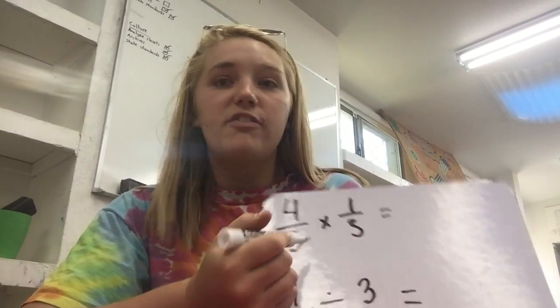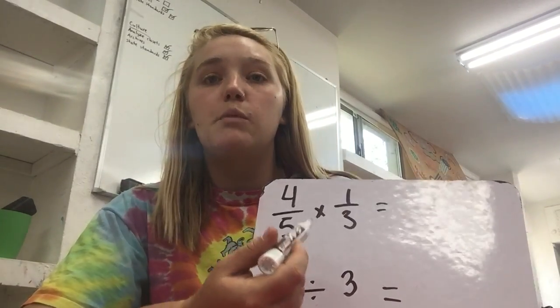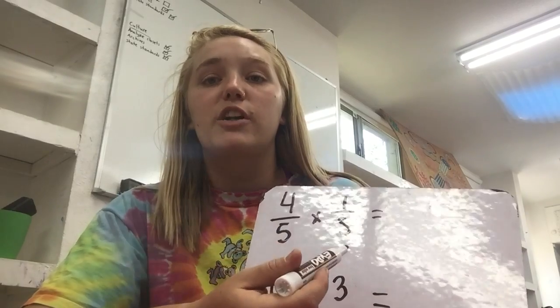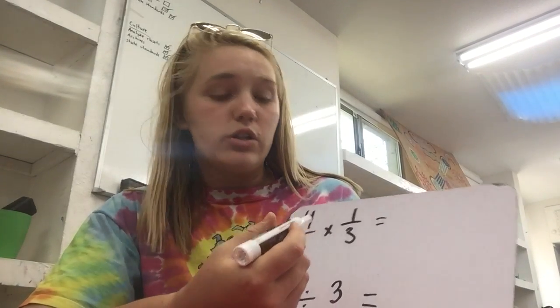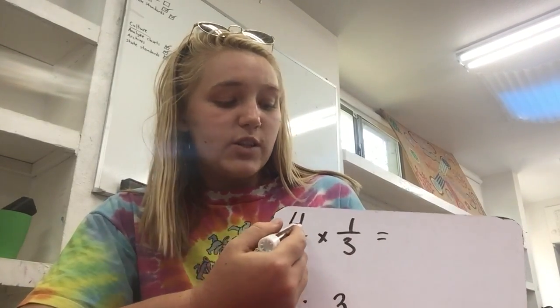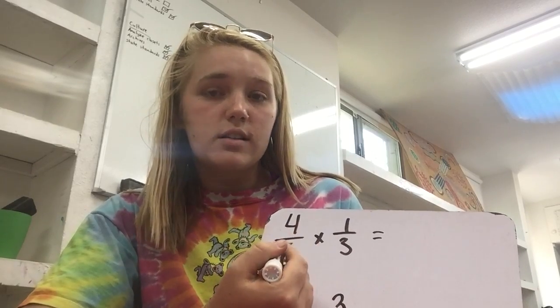I noticed that a lot of you did this problem one of two ways. The first way would be to take four-fifths and multiply it by one-third, because "as many" can mean multiplication. So for this, we would just multiply straight across.